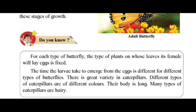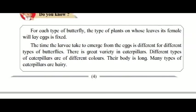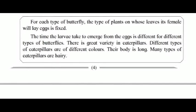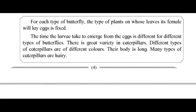For each type of butterfly, the type of plant on whose leaves the female will lay eggs is fixed. The time the larvae take to emerge from the eggs is different for different types of butterflies. There is great variety in caterpillars — different types are of different colors, their body is long, and many types of caterpillars are hairy.